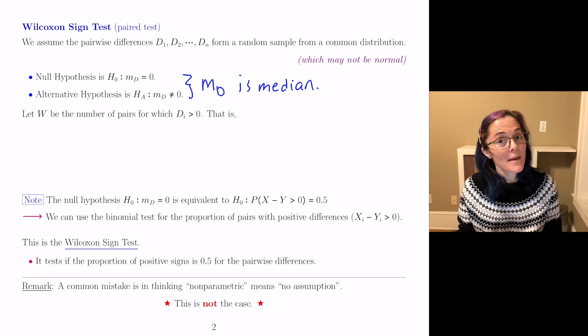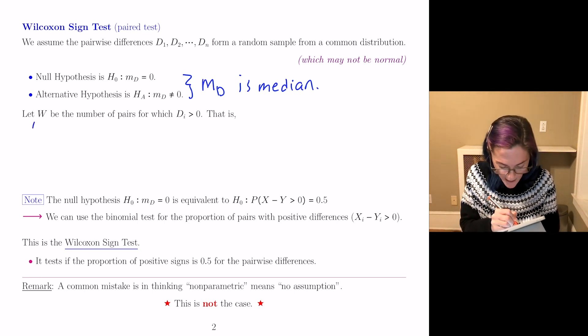We let capital W be the number of pairs for which Di is greater than zero. What does that mean? Well, remember, we are in the paired situation. So we have, say, X₁, Y₁.